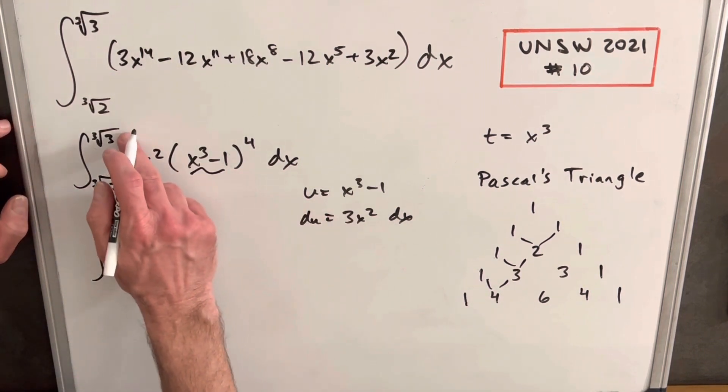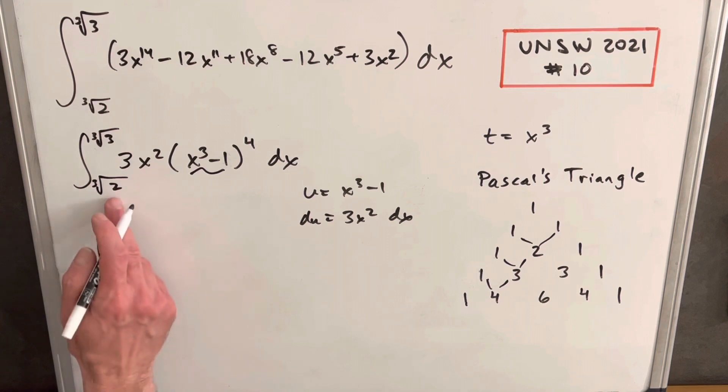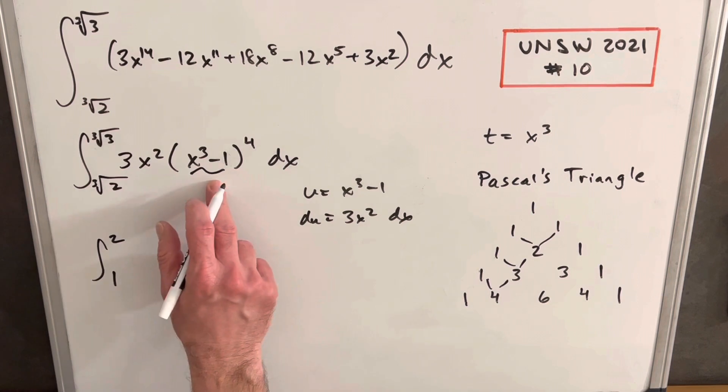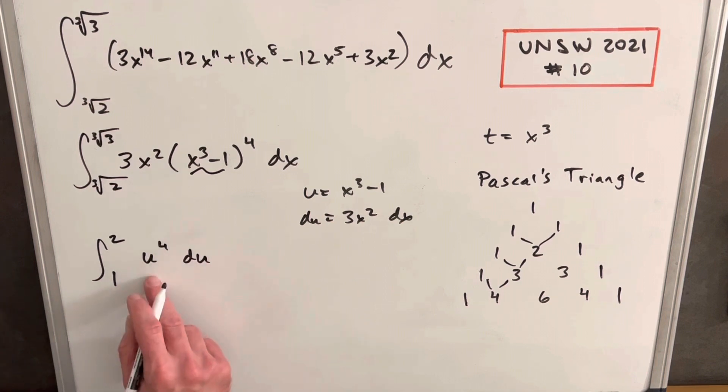So when we plug in cube root of 3 in here, we're just going to have 3 minus 1, so this top bound is going to be 2. And similarly on the bottom, we plug in cube root of 2, we're going to get 2 minus 1 is 1. After our substitution we're going to have the integral from 1 to 2 of u to the 4th du. So now we're doing the power rule again, but we just have one term.